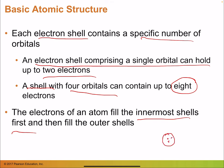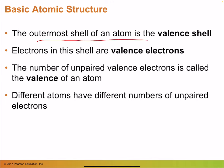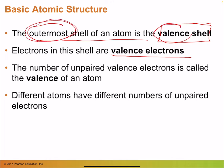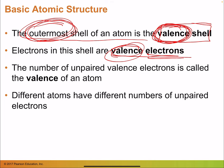Each electron shell contains a specific number of orbitals. The first shell can only hold two electrons. If a shell has four orbitals, each carries two, for a total of eight. Electrons fill the innermost shells first. The outermost shell is called the valence shell, and its electrons are the valence electrons. The number of unpaired valence electrons is also called the valence of an atom.